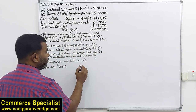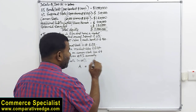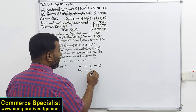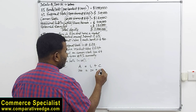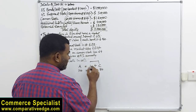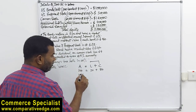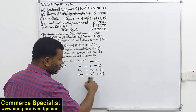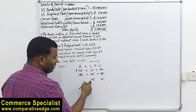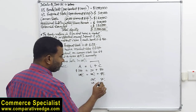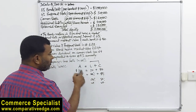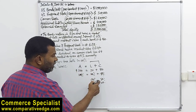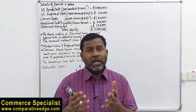Capital structure is like this: assets equal liabilities plus capital. If a company has total assets of 100, liability which is debt is 20, and capital which is equity is 80 — that is the capital structure. In percentage terms: debt is 20 percent and equity is 80 percent. This is the weight — what weight debt has in total assets is 20 percent, and what weight equity has in total assets is 80 percent.